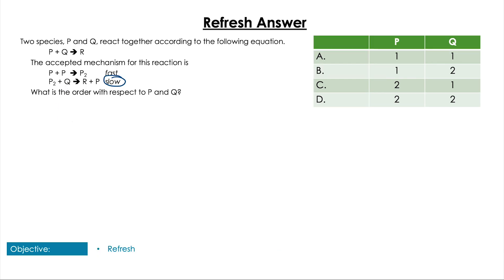Hopefully you remembered that we have to look for the slow step, so we can write our rate as equal to k times all the reactants of the slow step. We just need to double check this P2 molecule here is of course an intermediate. So we go back to the first step of the reaction and we see that the overall rate equation is going to be rate equals k times P squared times Q. So, minding our P's and Q's, P is second order, Q is first order, so the answer is C.